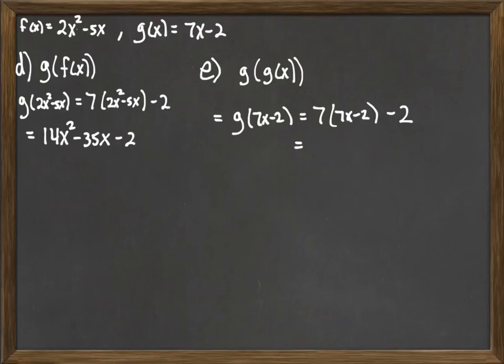So 7 times 7x minus 2. And then we multiply through. 7 times 7 is 49x. 7 times 2 is minus 14. And then, of course, we still have the minus 2.